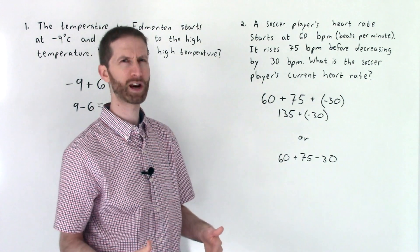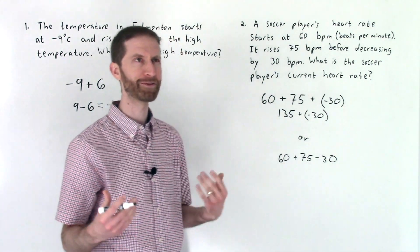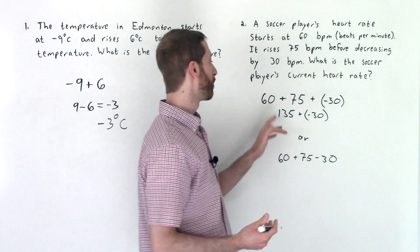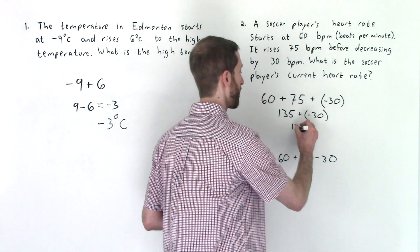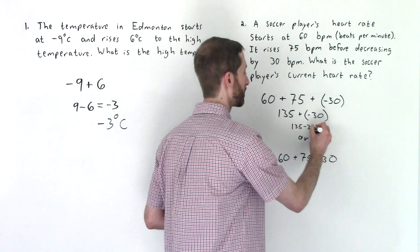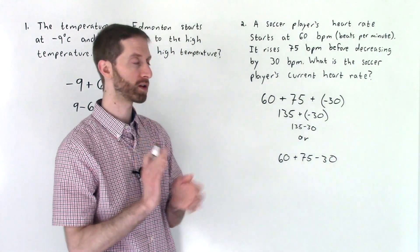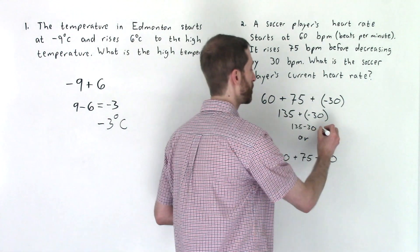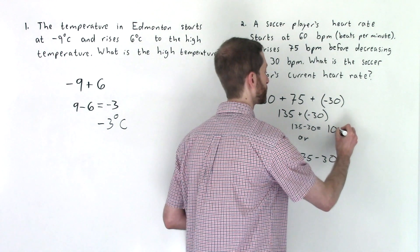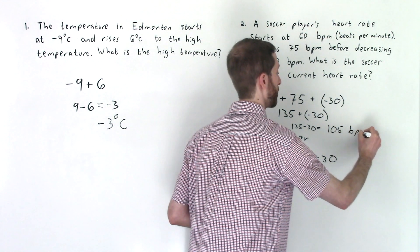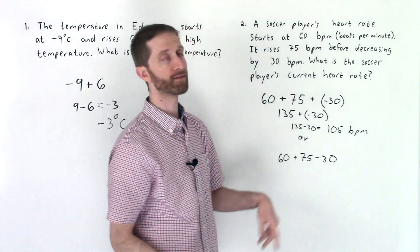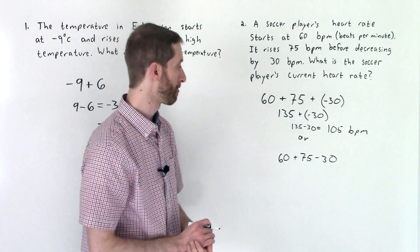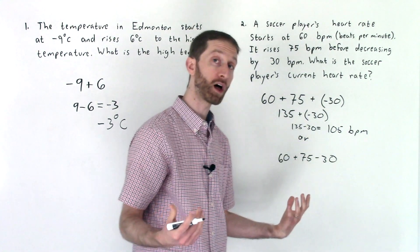You wouldn't want to have a negative heart rate. That would be really bad. So 135 plus a negative 30 mentally, I'm really doing 135 minus 30. And I'll put that a little tinier. So you know that that's not the work that I'm necessarily doing out. That is equal to 105, which would be beats per minute. And again, we keep the sign being positive because 135 is a larger number than negative 30.